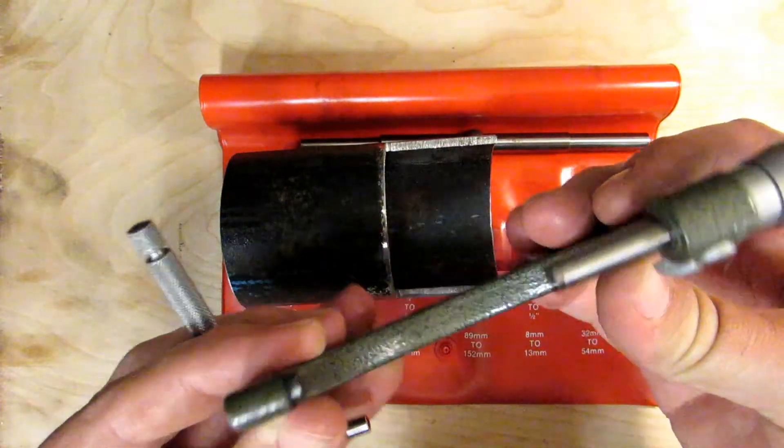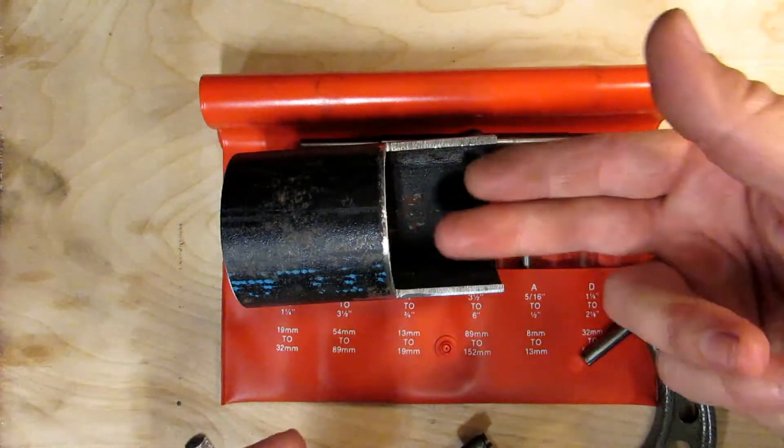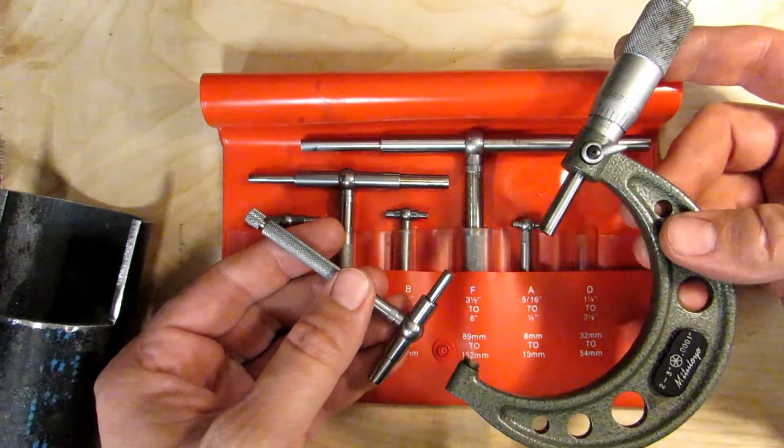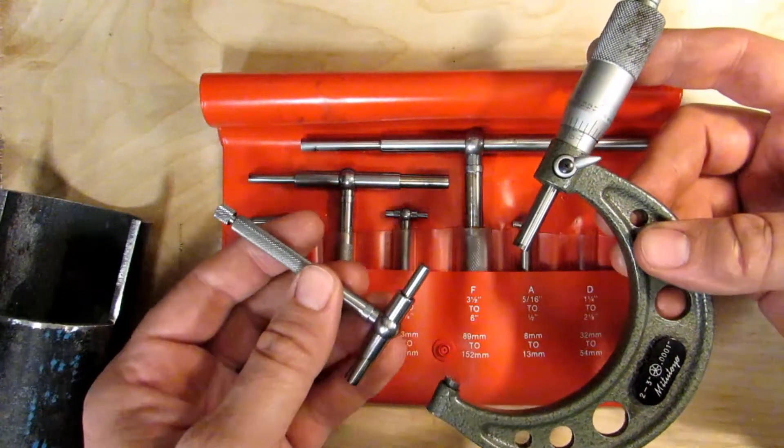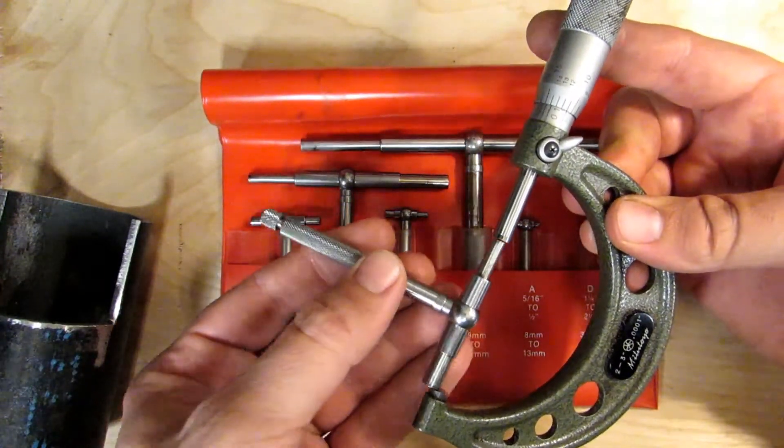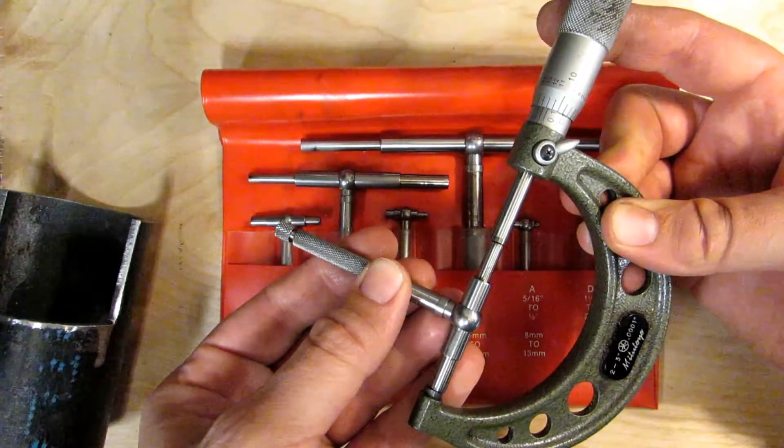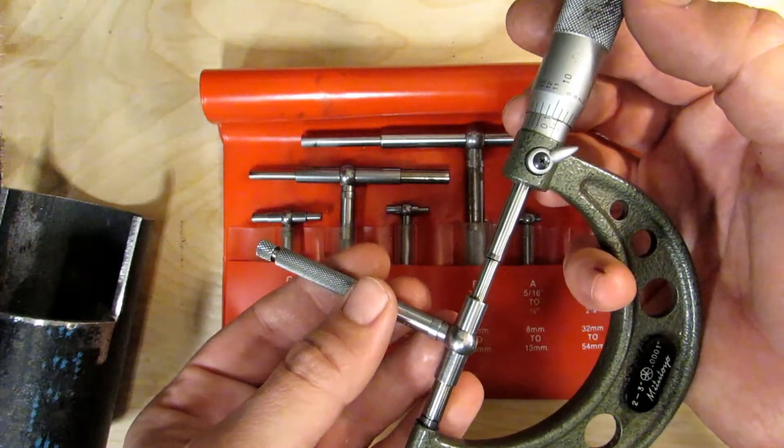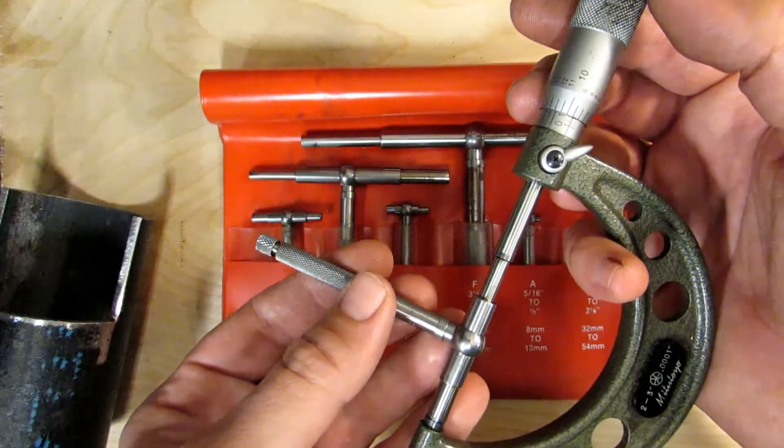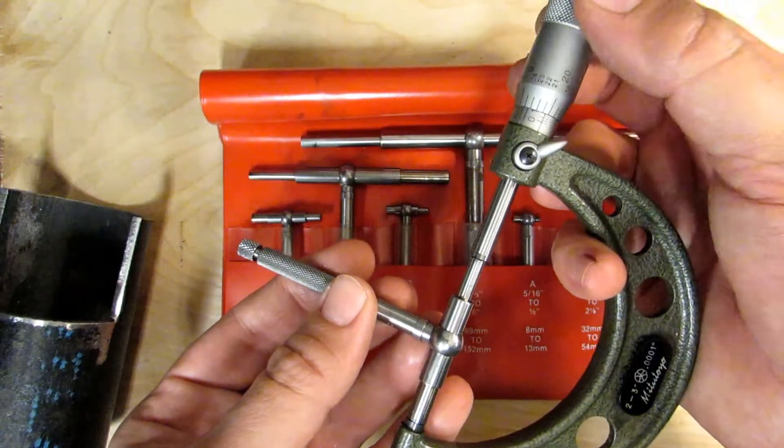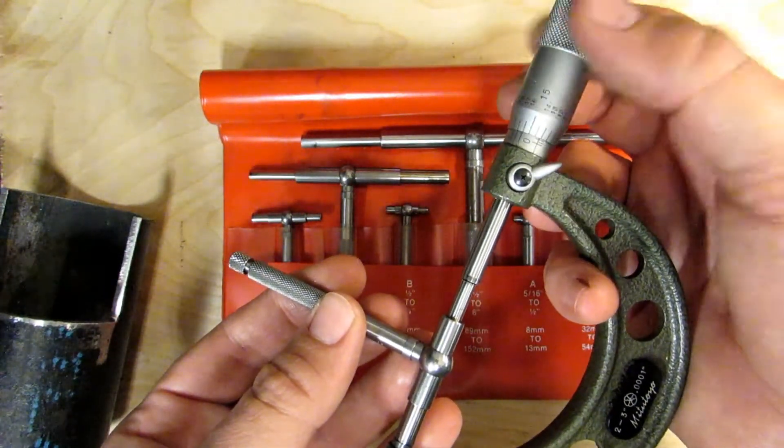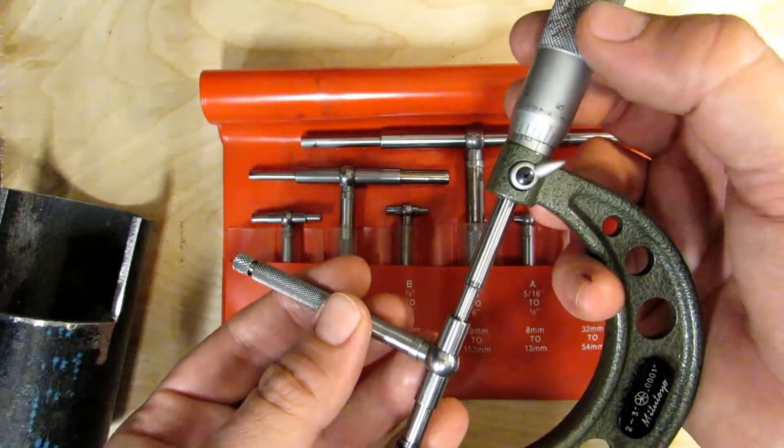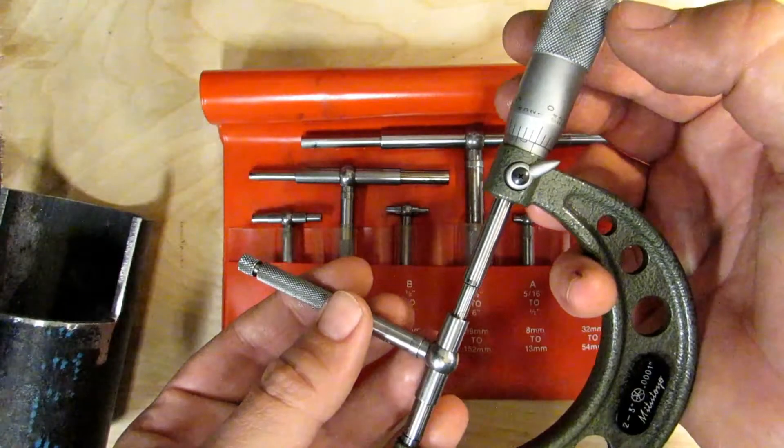I'd like to talk a little bit about the pitfalls that come with measuring with telescoping gauges. One of them is the ability to move these pistons in with the micrometer head. We had measured 2.109 and some change there earlier. Well, I can just keep on moving this in, and if I want, I can easily wish the measurement into existence and make it read 2 inches. It doesn't mean that my bore is actually 2 inches, it just means that my micrometer is 2 inches.